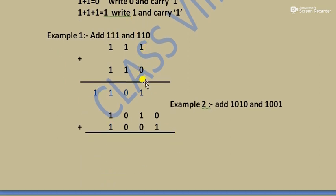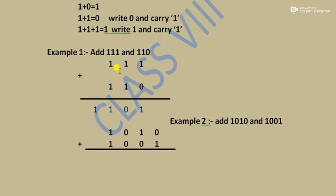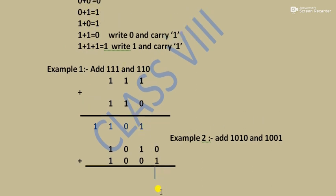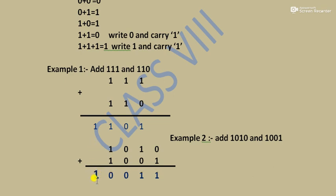The second example: we will add 1010 and 1001. Working through each column: 0+1=1, 1+0=1, 0+0=0, 1+1=0 carry 1. Since there is no further digit, we write the carry here. The result is 10011.